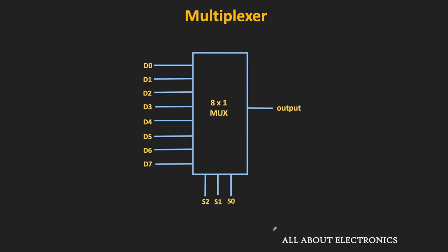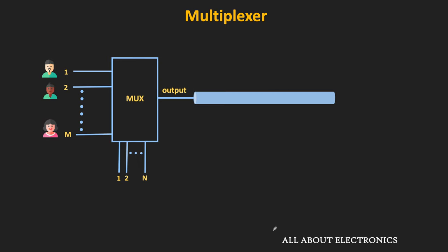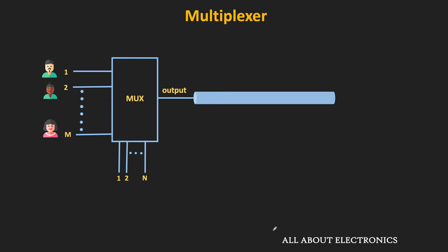The multiplexer is used when channel resources or channel bandwidth is limited and we want to share resources with multiple users. It is typically used in analog and digital communication systems for time division multiplexing. Depending on the inputs at the selection line, the data of only one user will be available at the output. By changing the inputs to the selection line over time, the data of different users can be put on the output side, allowing the same channel bandwidth to be shared with multiple users. Apart from that, the multiplexer can also be used for implementing different boolean functions.